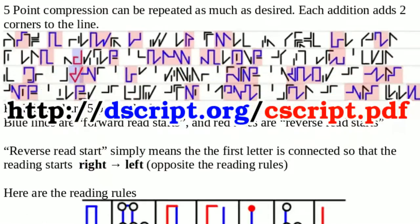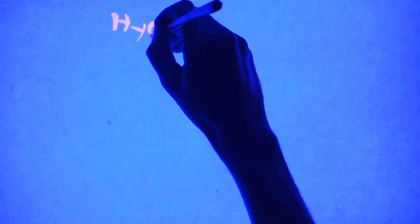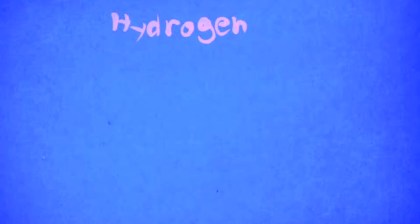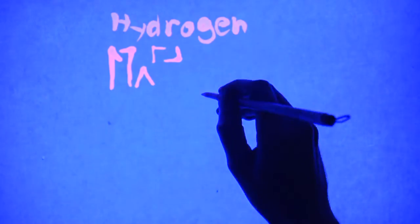The rules of Cscript are clearly outlined in the short PDF in the link in the description below. So here we'll look at some ways of writing the word hydrogen in Cscript. Here are the individual letters for H-Y-D-R-O-G-E-N.